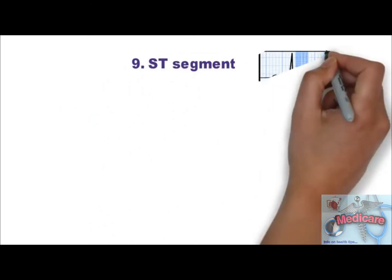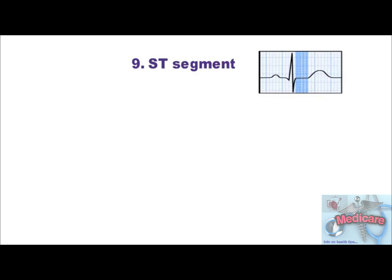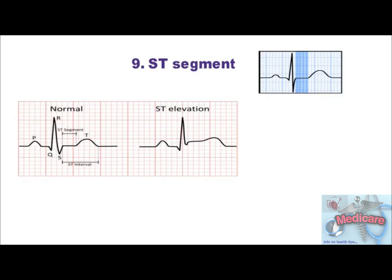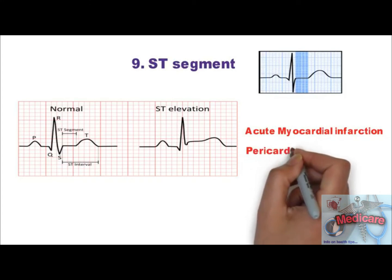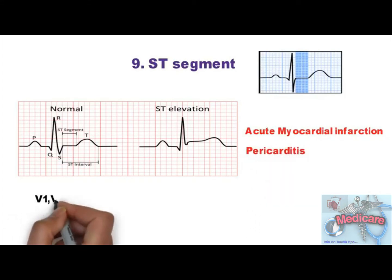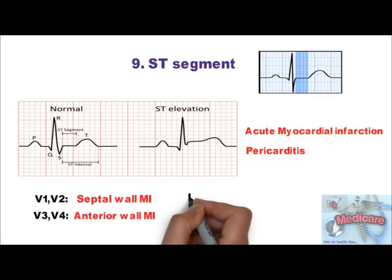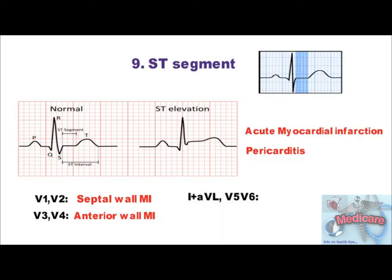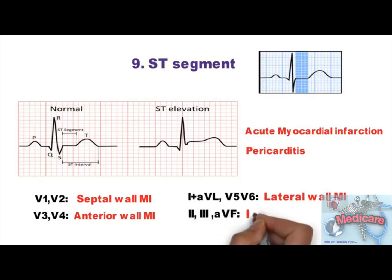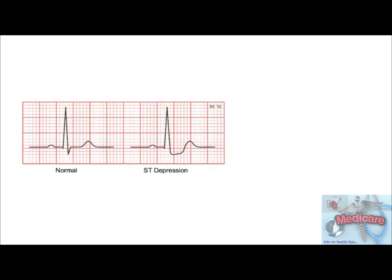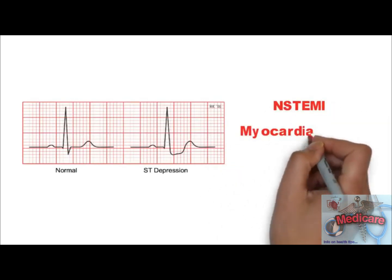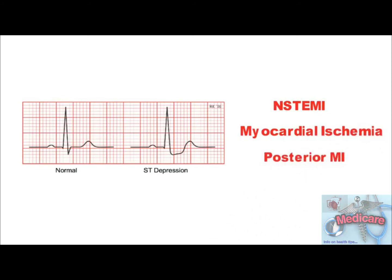Step 9 is ST segment. It is the flat isoelectric section of the ECG between the end of the S wave — the J point — and the beginning of the T wave. ST elevation can commonly be due to acute myocardial infarction or pericarditis. ST elevation in V1-V2 indicates septal wall MI; in V3-V4, anterior wall MI; in leads 2, 3, and AVF, inferior wall MI. ST segment depression is seen in NSTEMI, myocardial ischemia, posterior MI, and many other causes.